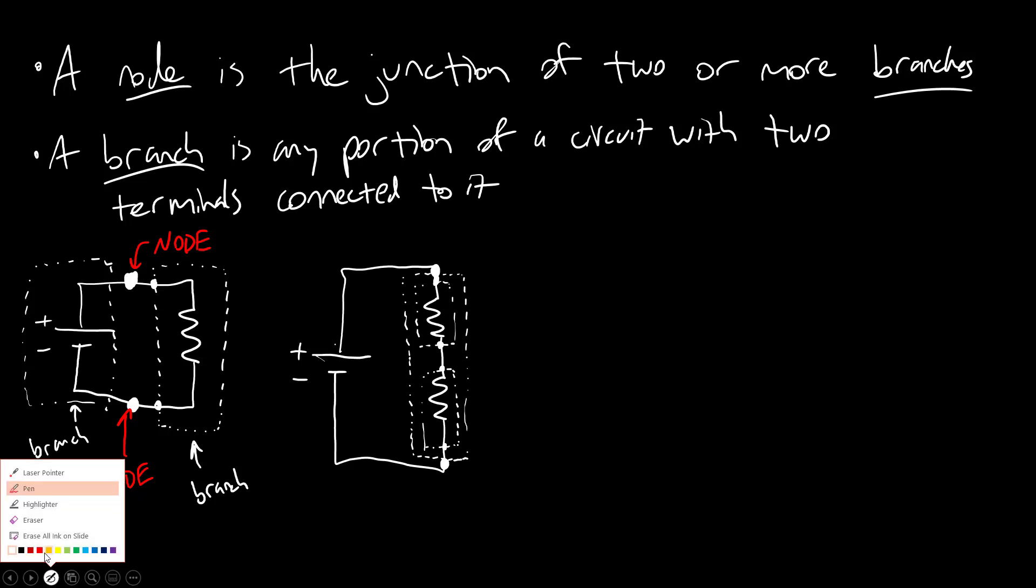So if I went through this circuit and labeled each node where two branches are connected, I could call it node A, node B here, and node C down here. Usually when adding things in series that isn't much of a problem.